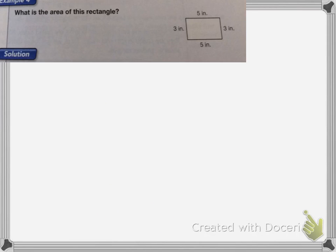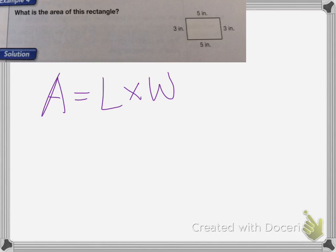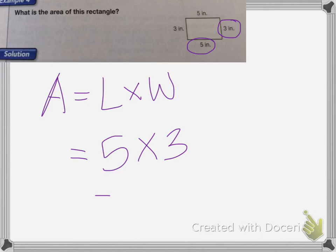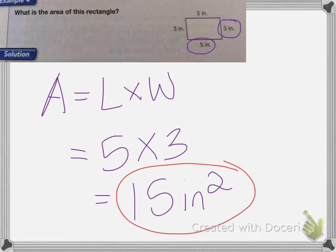This next part is finding the area of a rectangle. When you're finding the area of a rectangle, area equals length times width. My length is 5 and my width is 3, so the area equals 5 times 3, which is 15 inches squared. With area, we always square the units.